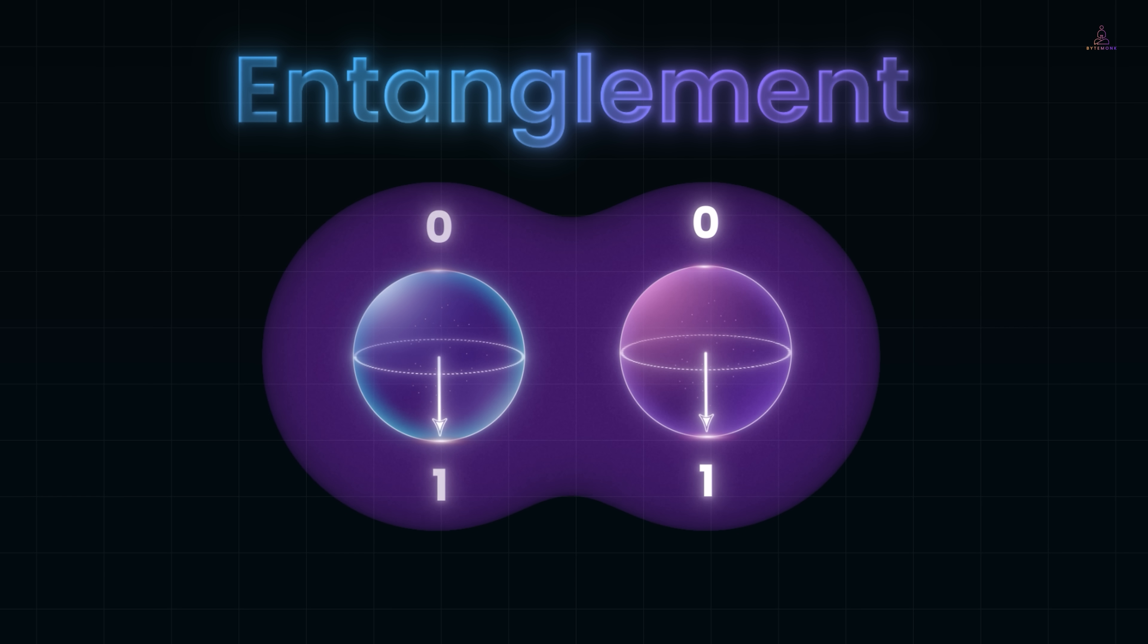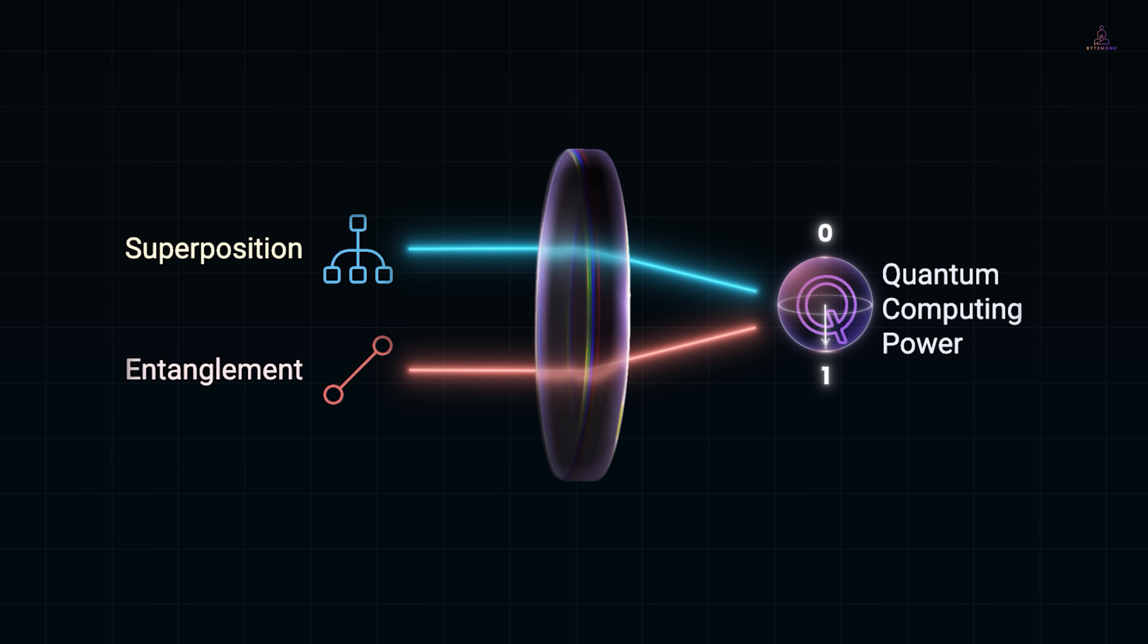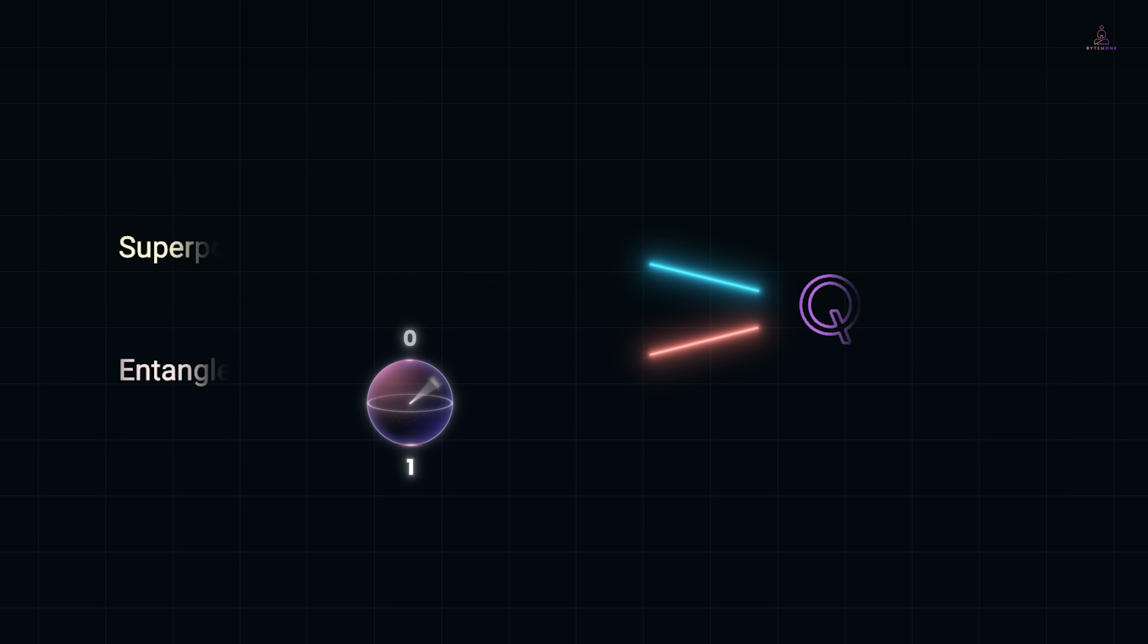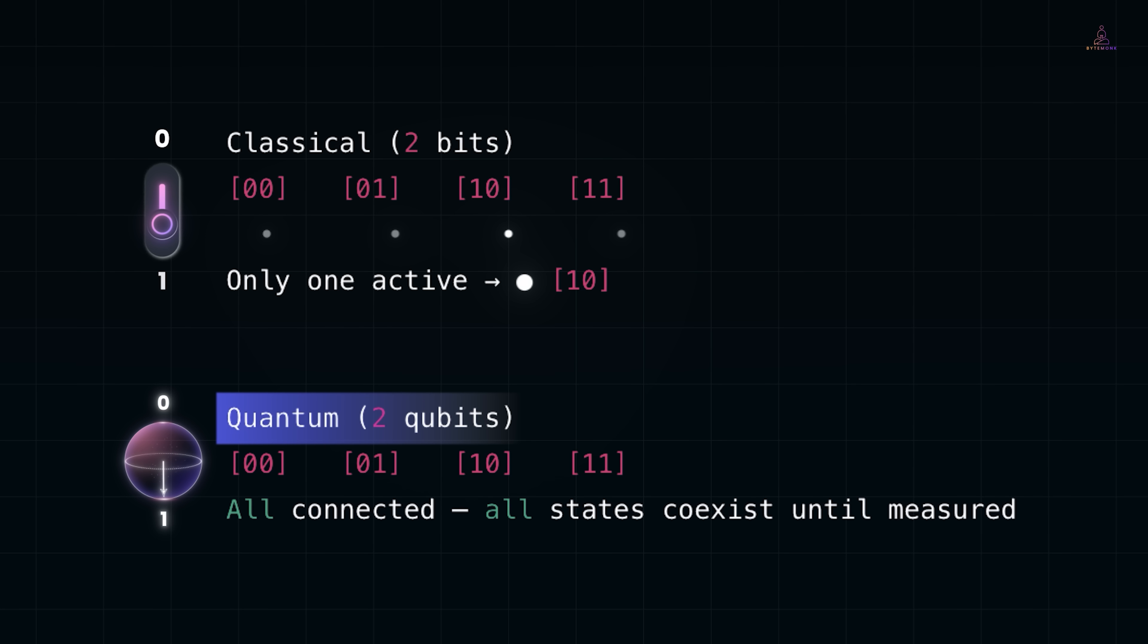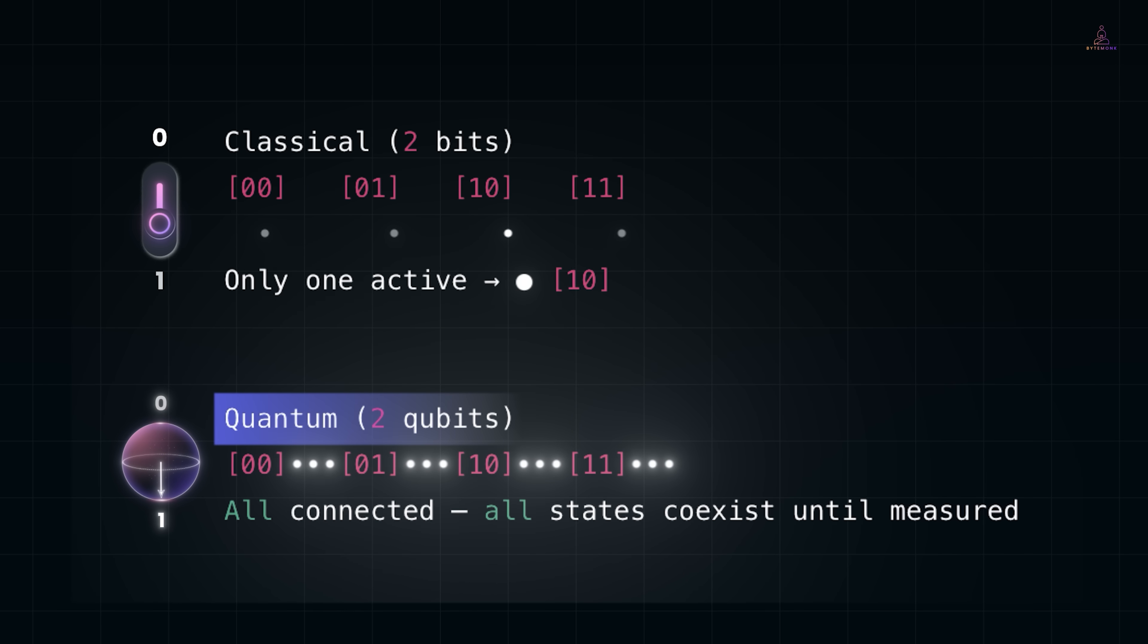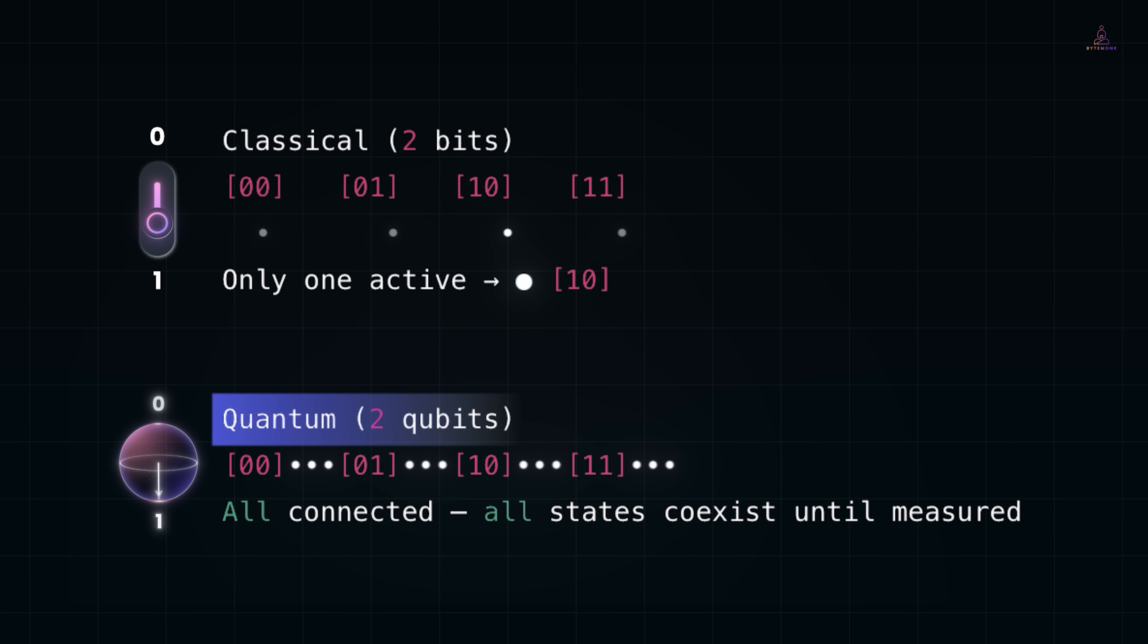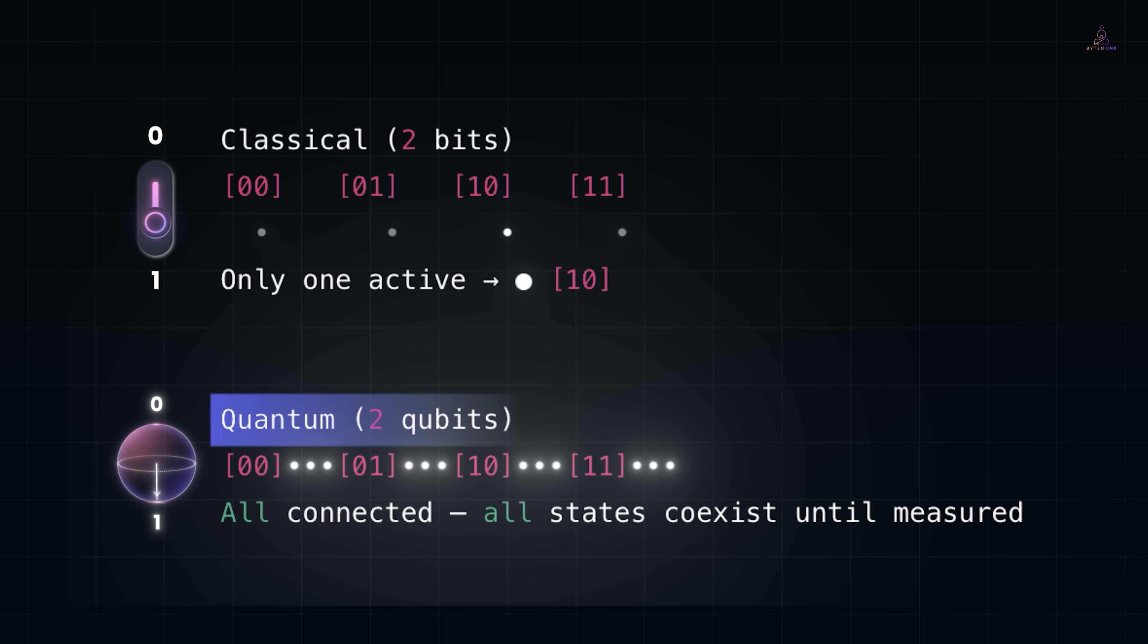With entanglement, a group of qubits can coordinate in ways classical bits never could, allowing quantum computers to process certain complex problems with breathtaking efficiency. Superposition lets each qubit explore many possibilities at once, and entanglement ties qubits together so they act in harmony. These two concepts form the backbone of quantum computing's power. For example, with two classical bits you can store one of four possible values at a time. But two qubits in superposition can effectively represent all four values simultaneously until measured. If those qubits are entangled in just the right way, a quantum algorithm can then use their combined state to perform computations that consider multiple inputs at once, and then use interference to amplify the correct answers.